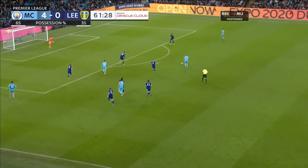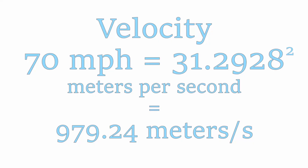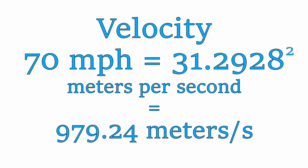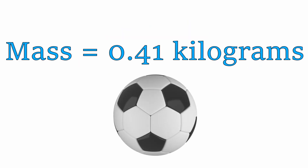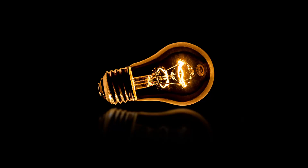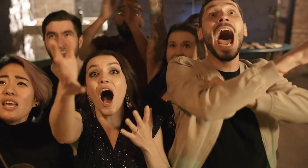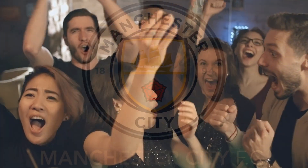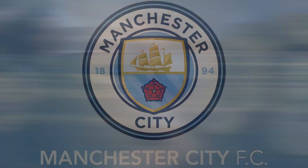So we know the velocity of the ball is 70 miles per hour, which is equal to 31.29 meters per second. The mass of a soccer ball is 0.41 kilograms. So when we put this into our equation and do the math we get 200.7 joules of energy. This is enough to power a 100 watt light bulb for two seconds. What an amazing shot and it gives you an idea of how kinetic energy manifests.